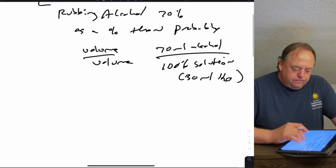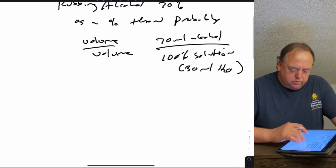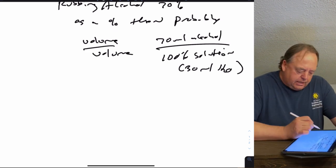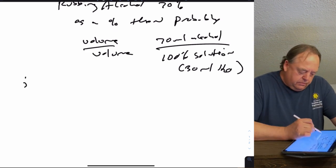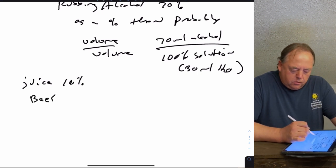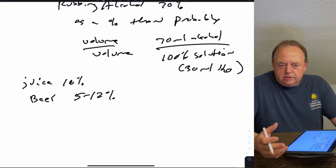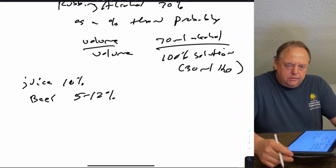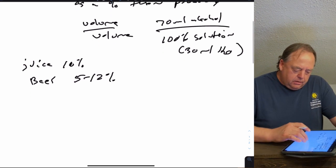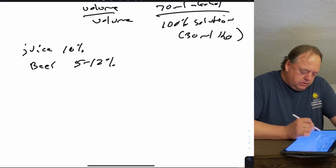Percentage volume-to-volume is one way to measure concentration, and you can see this in lots of places. In the grocery store you might find juice at 10%, or beer and alcohol anywhere from 5 to 12% alcohol, with the rest being water. But this is not the way that chemists usually report concentration.